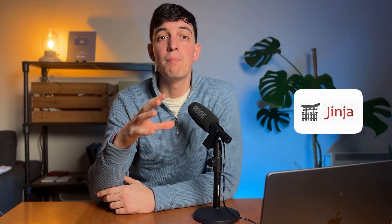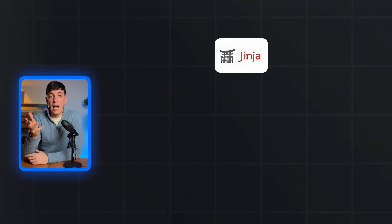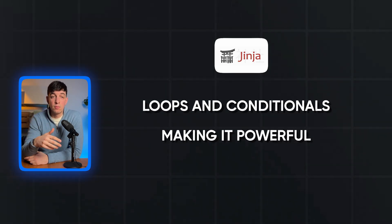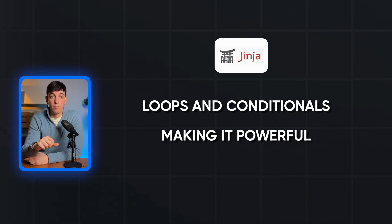Not many people know that DBT also supports Jinja, which is a templating language that is like a mix of SQL and Python. With Jinja, you can add dynamic features to your models such as loops and conditions, making it powerful for writing flexible and efficient transformations. DBT also provides the ability to run tests on your models, helping you perform different checks on your data to ensure quality and consistency.